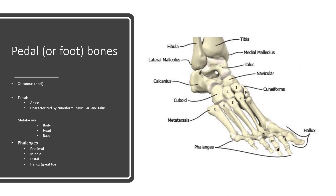Ending with the foot or pedal bones: the calcaneus is your heel. The tarsals make up your ankle and are characterized by cuneiforms, the navicular, and the talus. The metatarsals, like in your hand, consist of a body, a head, and a base. Your phalanges consist of proximal, middle, and distal portions. Your great toe is called the hallux. That is it for the appendicular skeleton.